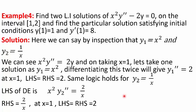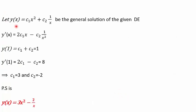To find the particular solution, write y = c1·x² + c2·(1/x), with derivative y' = 2c1·x − c2·(1/x²). Substituting x = 1 using y(1) = 1 gives c1 + c2 = 1. Substituting x = 1 in y' using y'(1) = 8 gives 2c1 − c2 = 8. Solving simultaneously gives c1 = 3 and c2 = −2. The particular solution is y(x) = 3x² − 2/x.